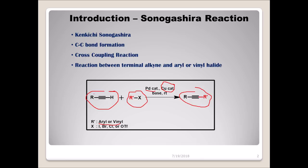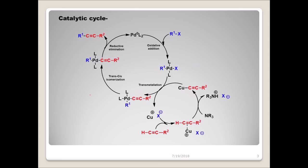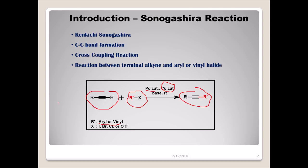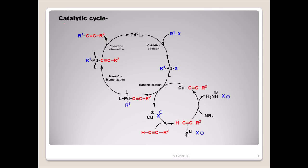Now coming to the mechanism. The first step is oxidative addition. We have a palladium catalyst in zero oxidation state, which is our active catalyst. Once we add the aryl halide or vinyl halide, the palladium gets inserted and the oxidation state changes to plus two. Palladium is now in the +2 oxidation state, inserted between the carbon and halogen bond.